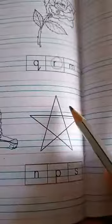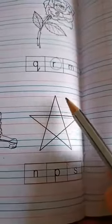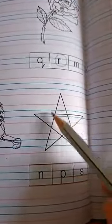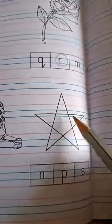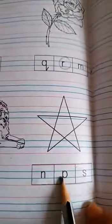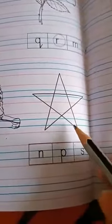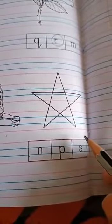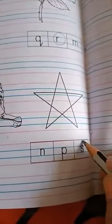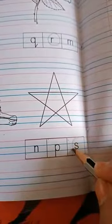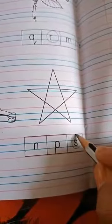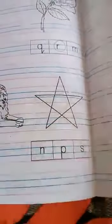Now this is a picture of a star. Star, so S for star. S ko pronounce karte hai SH. So on S we will do the circle. Ye ho gaya complete.